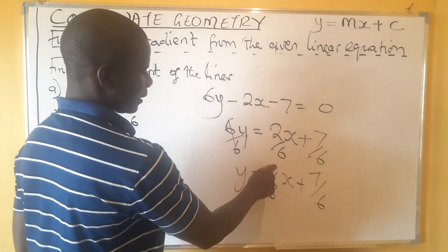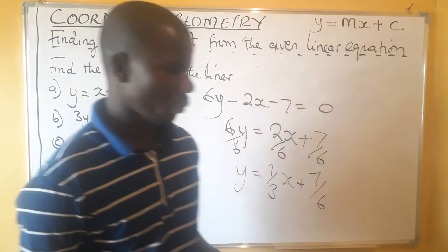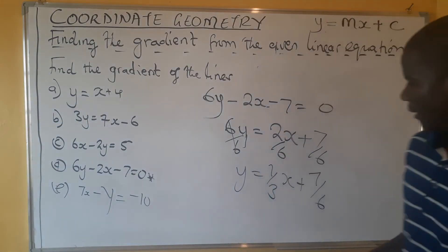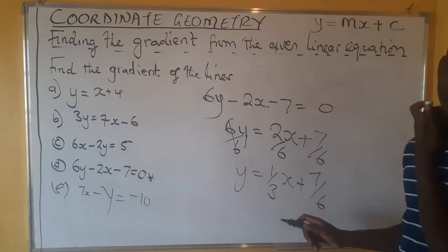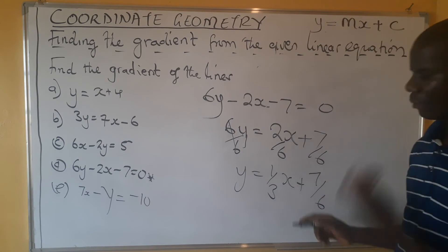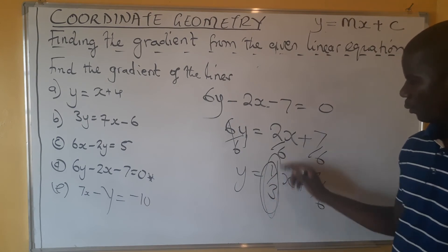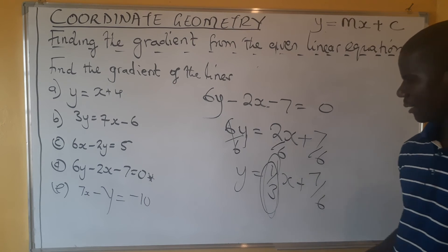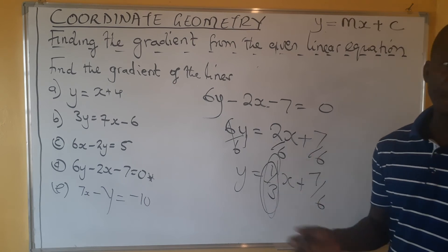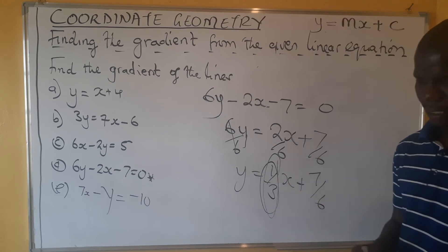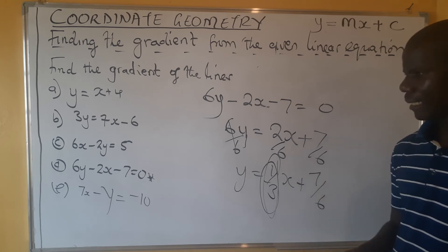Our interest here is to find the gradient. Our gradient is the coefficient of x, which is 1/3. Note that if the coefficient were negative, your gradient would also be negative. Make sure you take care of the sign.